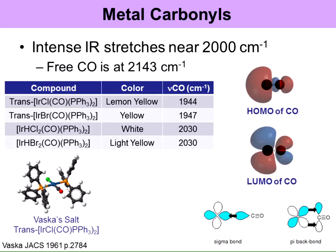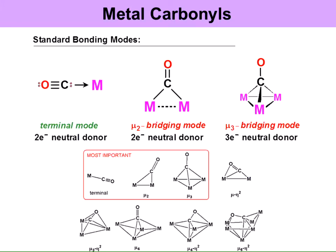Looking at metal carbonyls more generally, there are a couple of standard bonding modes. There is a terminal mode where you have end-on binding of the CO — donation from the carbon to the metal — considered a two-electron neutral donor. The carbonyl can also bridge two metal centers, and it can bridge multiple metal centers such as three, which is still a neutral donor but considered a three-electron donor. The most important modes are terminal, bridging two metal centers, and bridging three metal centers.